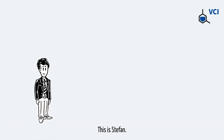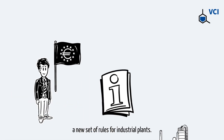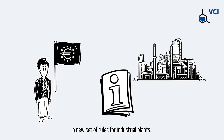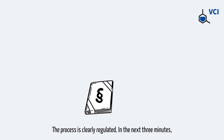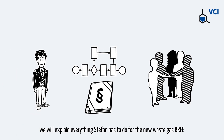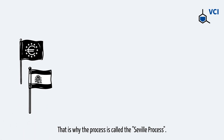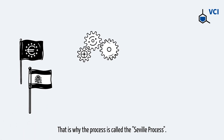This is Stefan. He works for the EU Commission and is asked to write a new set of rules for industrial plants. The process is clearly regulated. In the next three minutes we will explain everything Stefan has to do for the new waste gas BRAF. The EU's office in charge of BRAFs is located in Seville in Spain. That is why the process is called the Seville process.